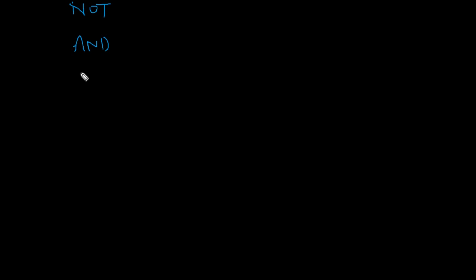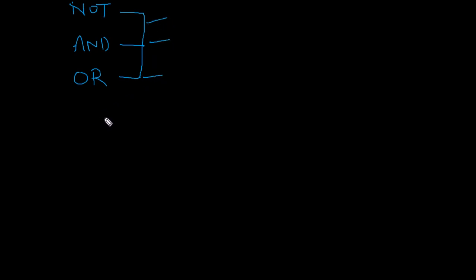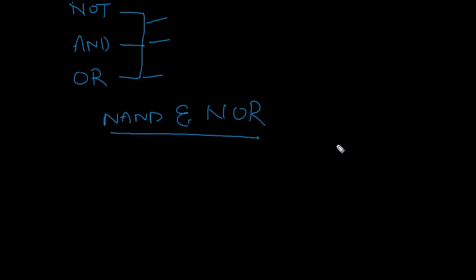Now we will see one by one what is the NOT gate, AND gate, and OR gate — these are the basic gates. We have three basic gates plus exclusive OR, so four total. After covering NOT, AND, and OR, we will proceed to NAND and NOR gate.